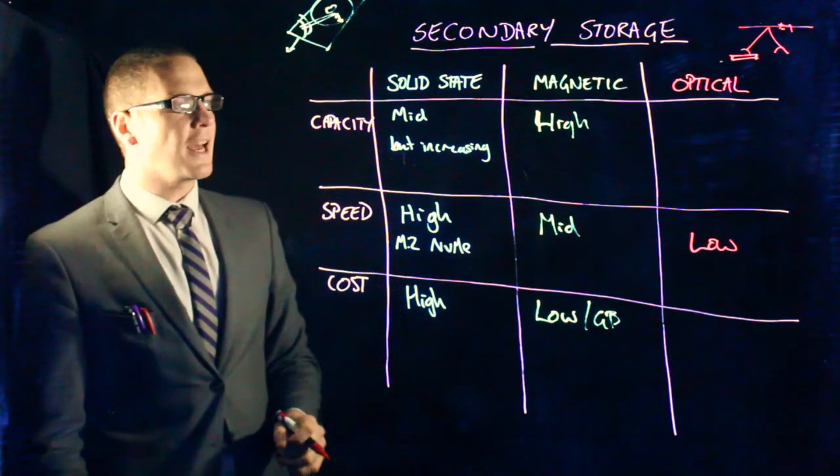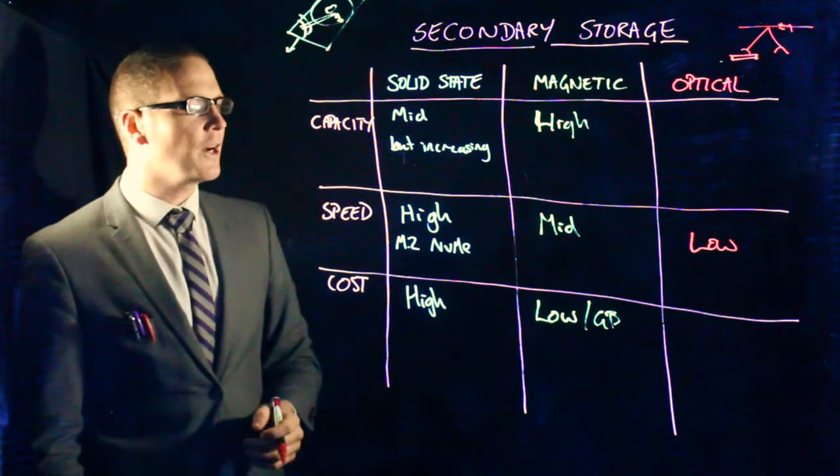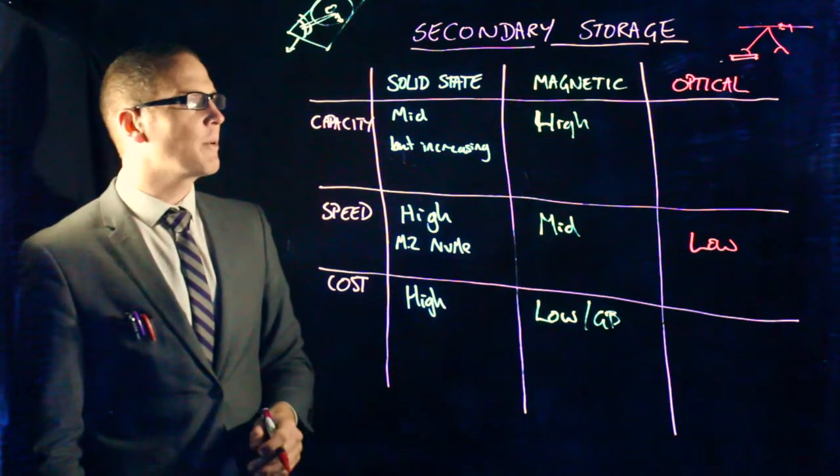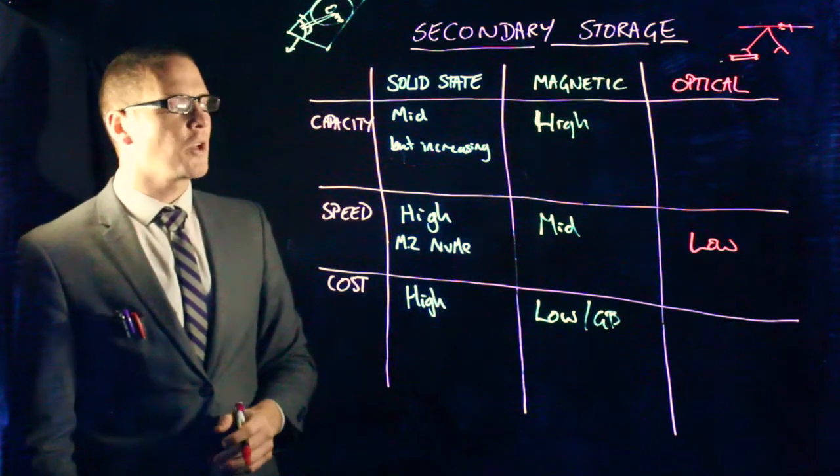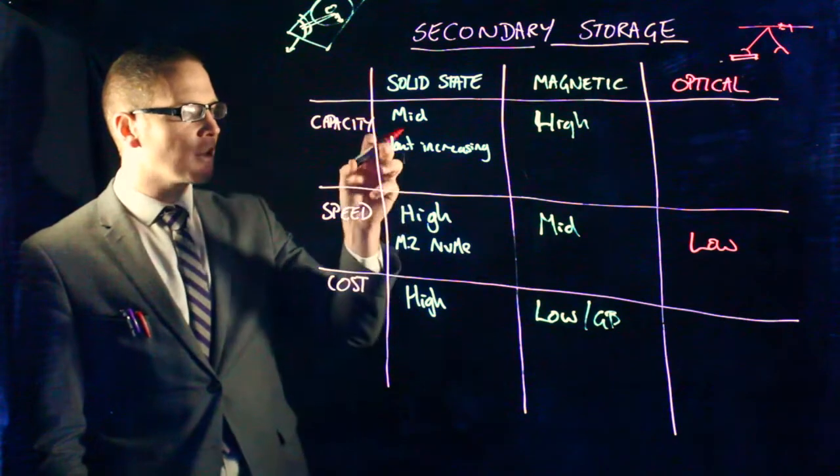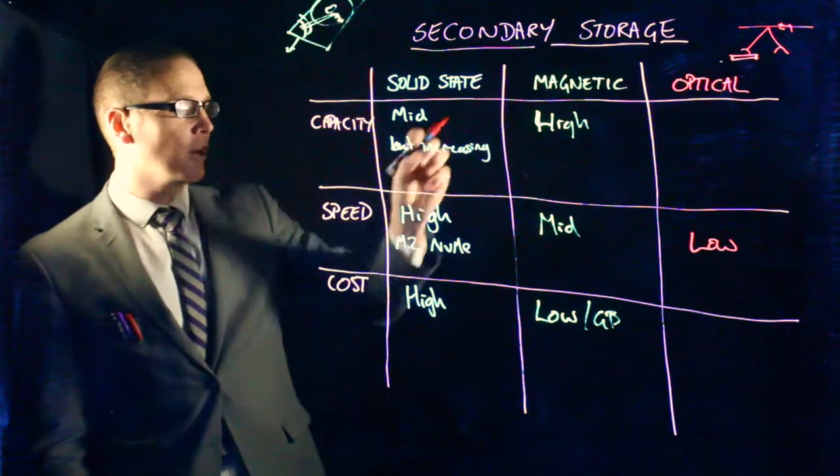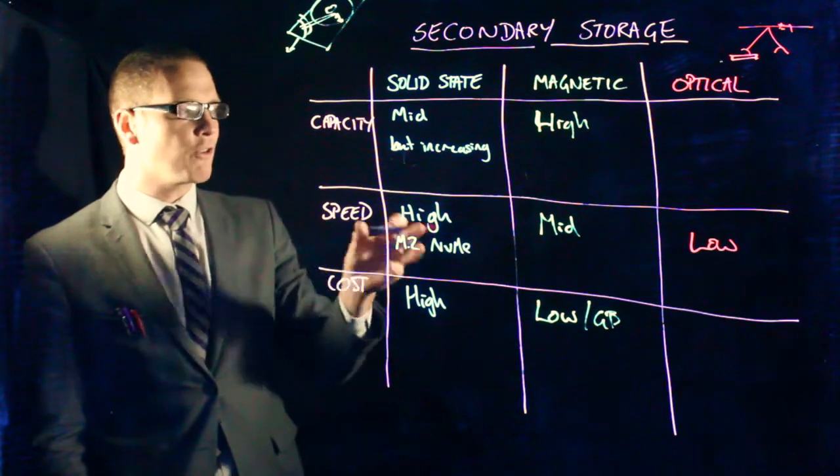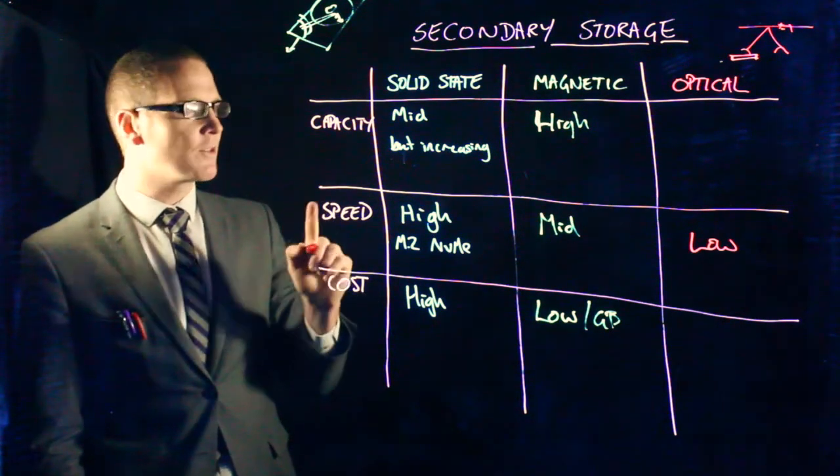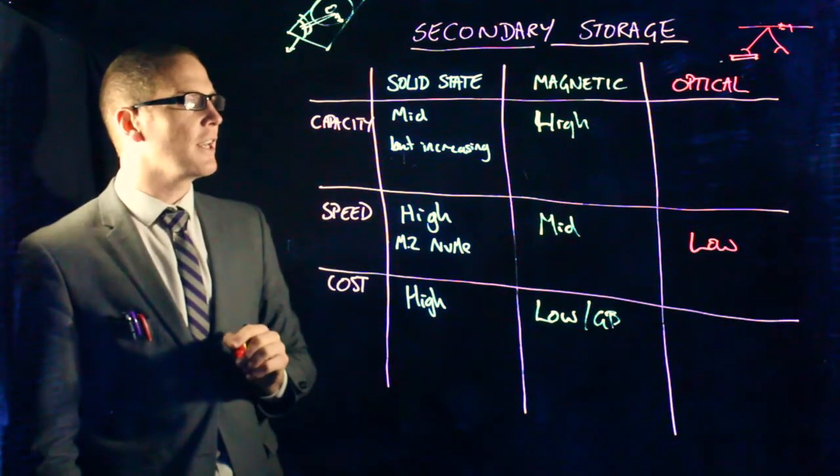even lower than a magnetic disc. Magnetic hard drives, you can spin at either 5,400 or 7,200 revs per minute. Optical drives, not nearly so much. And because the capacity per square inch in terms of ones and zeros is lower on optical, that means that you're not reading off as many ones and zeros per revolution of the disc as well.